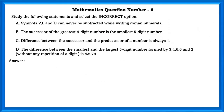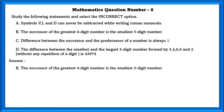Mathematics question number 8. Study the following statements and select the incorrect option. A: Symbols V, L and D can never be subtracted while writing Roman numerals — this is true. B: The successor of the greatest four-digit number is the smallest five-digit number — this is also true; the greatest four-digit number is 9999 and its successor is 10,000. C: The difference between the successor and predecessor of a number is always 1 — this is wrong. The difference between the successor and the predecessor of a number is always 2.